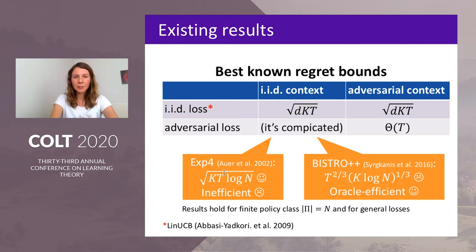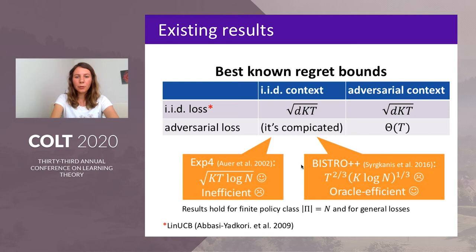The regret of EXP4 is minimax optimal, but the algorithm is not computationally efficient because it must store weights for each policy in the policy class. Also in this setting, there is the Bistro++ algorithm that has regret of order T^(2/3). This is slightly worse, but the algorithm is oracle efficient. Both of these algorithms do not restrict to linear loss functions.